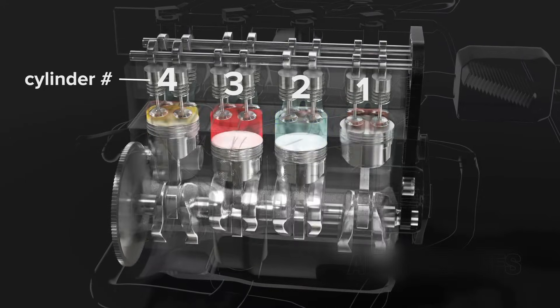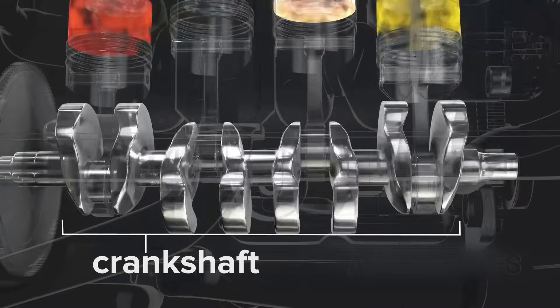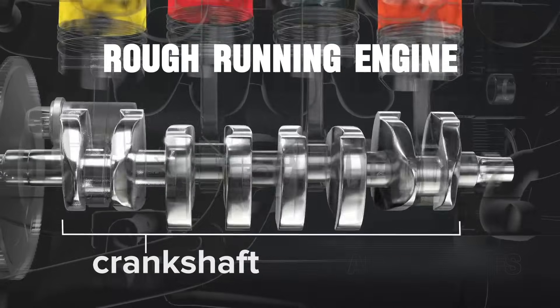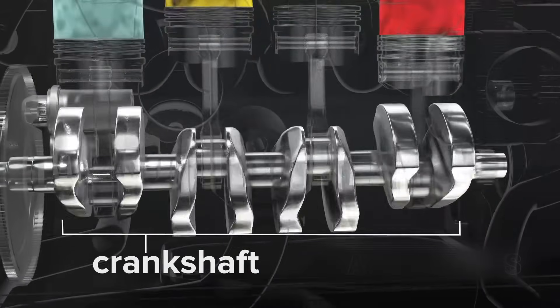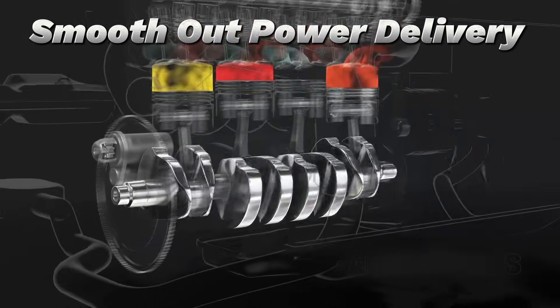Each piston fires in its own cycle, but between those combustion events, there are tiny pauses. Without something to balance it out, the crankshaft would jerk and vibrate, leading to a rough running engine. This is where the flywheel comes in. Its job is to store rotational energy and smooth out the delivery of power.